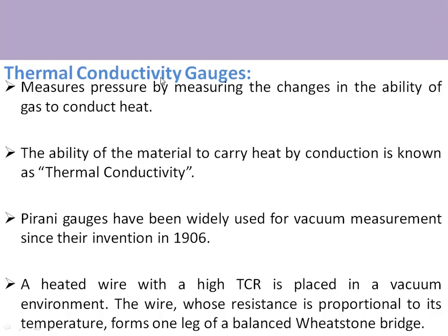Thermal conductivity gauges are discussed in this video — specifically the Pirani gauge. In the Pirani gauge, the ability of gas molecules to carry heat is used to measure pressure. It measures pressure by measuring the change in the ability of the gas to conduct heat. Higher pressure means more gas molecules are present and more heat will be transferred. The ability of a material to carry heat by conduction is known as thermal conductivity, and the Pirani gauge based on this principle has been widely used for vacuum measurement since its invention in 1906.